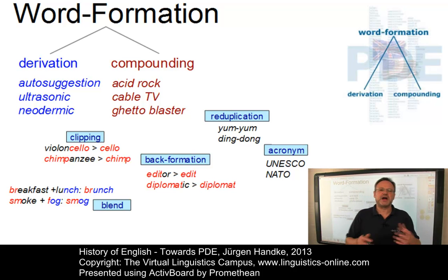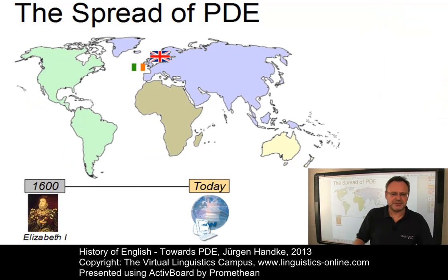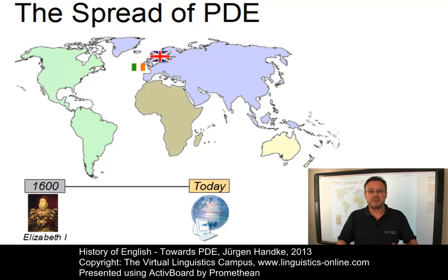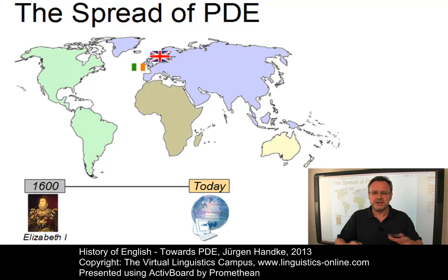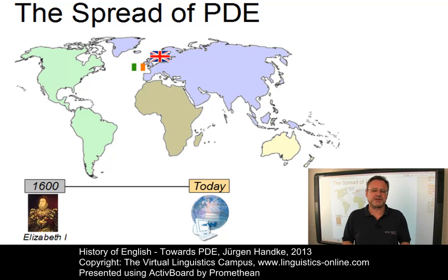Let us now turn our attention to the outer development of English. The first significant step in the progress of English towards its status as a global language did not take place before the end of the 16th century. By the end of the reign of Elizabeth I in 1603, literature had boomed through the works of Spenser, Marlowe and Shakespeare, and Francis Drake and Walter Raleigh had laid the foundation for expanding the English influence in the New World.